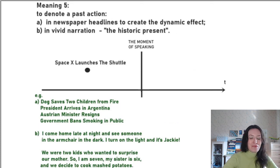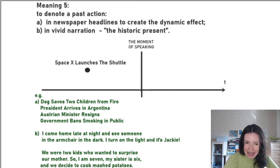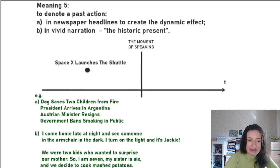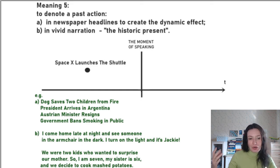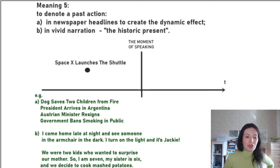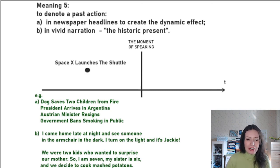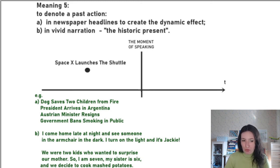Meaning five is when the present indefinite occupies the territory of past tenses and denotes past actions. There are two cases. First, in newspaper headlines, journalists often create a dynamic effect as if something is happening right now, and they talk about past events in the present tense. For instance: 'Dog saves two children from fire.' In fact, the dog saved the children a week ago, but we write it in the present indefinite to make it more dynamic.